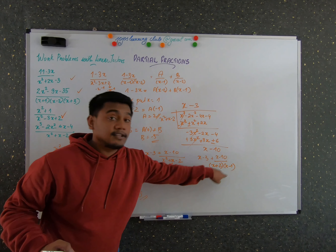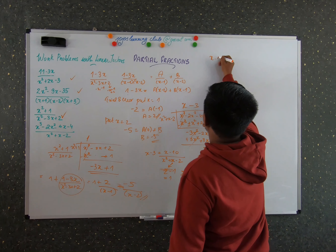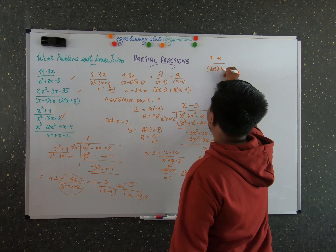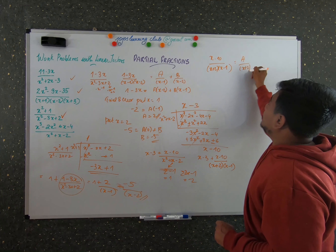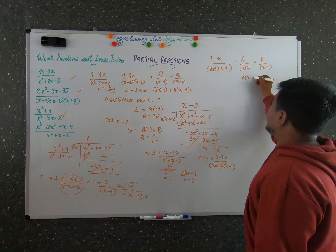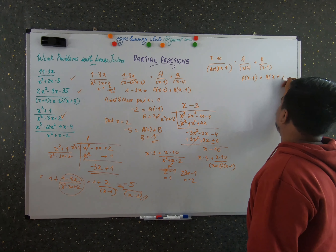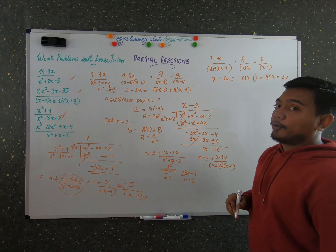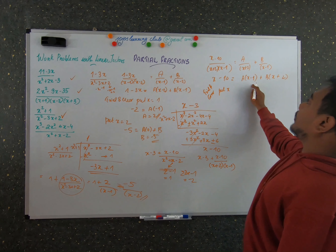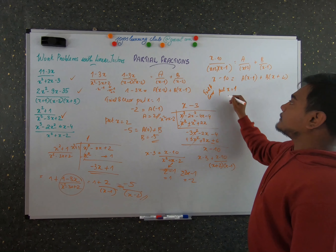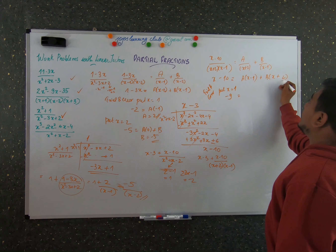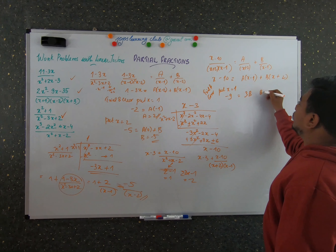Now we break this into partial fractions. So x minus 10 by (x plus 2)(x minus 1) equals A by (x plus 2) plus B by (x minus 1). Taking LCM: A(x minus 1) plus B(x plus 2) equals x minus 10. Trial and error: put x equals 1 — 1 minus 10 is minus 9, and (1 plus 2) equals 3, so 3B equals minus 9, meaning B equals minus 3.